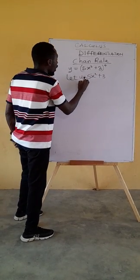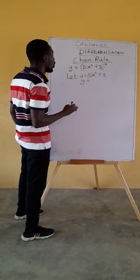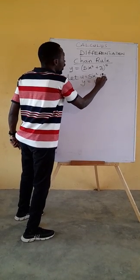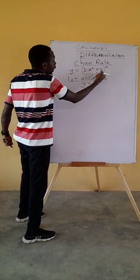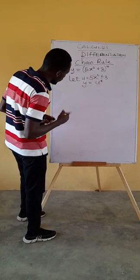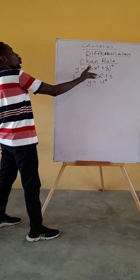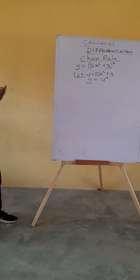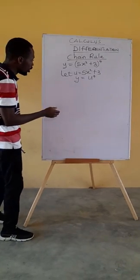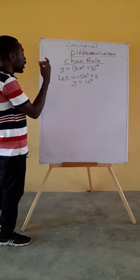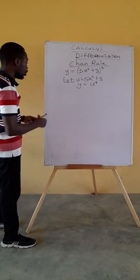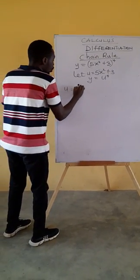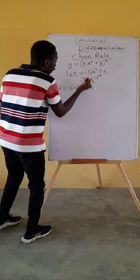Then this will bring our equation into the form y also equals u^4. In the place of 5x^2 + 4x + 3, we put our u. Then now we have two equations. So we will differentiate each of these equations with respect to their individual independent variables.